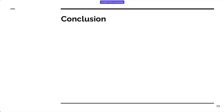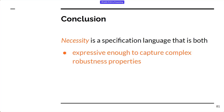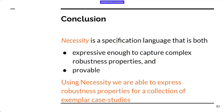In conclusion, Necessity is a specification language that is both expressive enough to capture complex robustness properties — as we saw with the bank account example — and provable: we have a proof system for it that we've proven sound. Using Necessity, we're able to express robustness properties for a collection of exemplar case studies. Thank you very much.